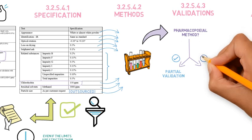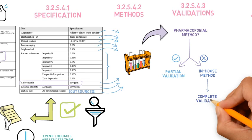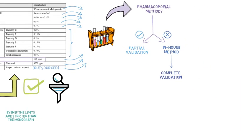However, when there are differences, the method is considered in-house, and a complete validation will be needed. The ICH guideline that should be followed is Q2.